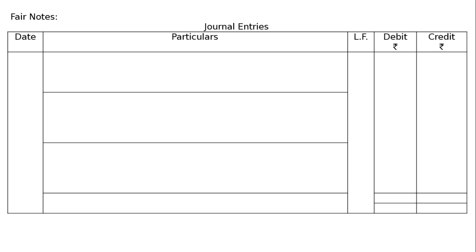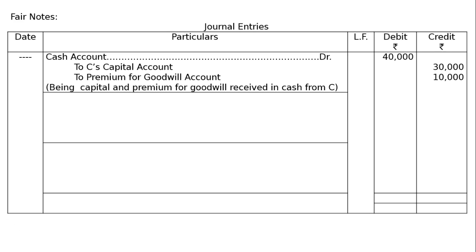First journal entry — bringing cash and capital into the business: Cash account debited Rs. 40,000; To C's capital account Rs. 30,000; To premium for goodwill account Rs. 10,000. Being capital and premium for goodwill received in cash from C.